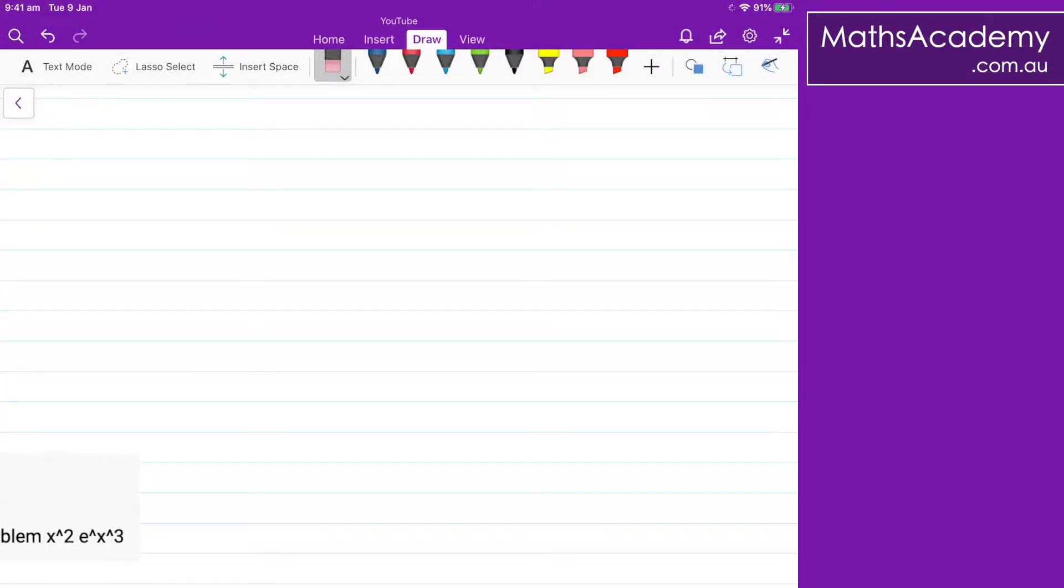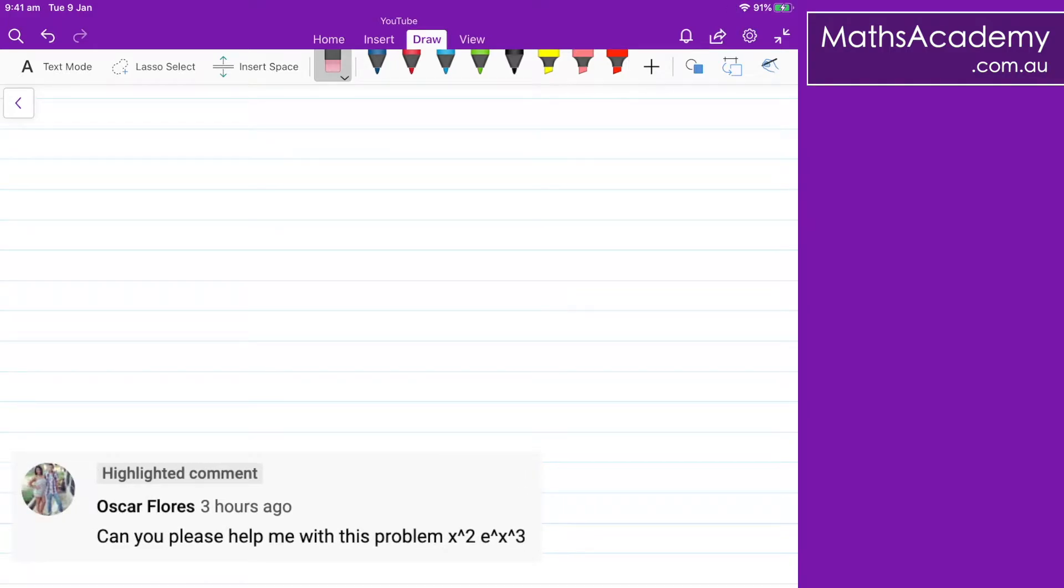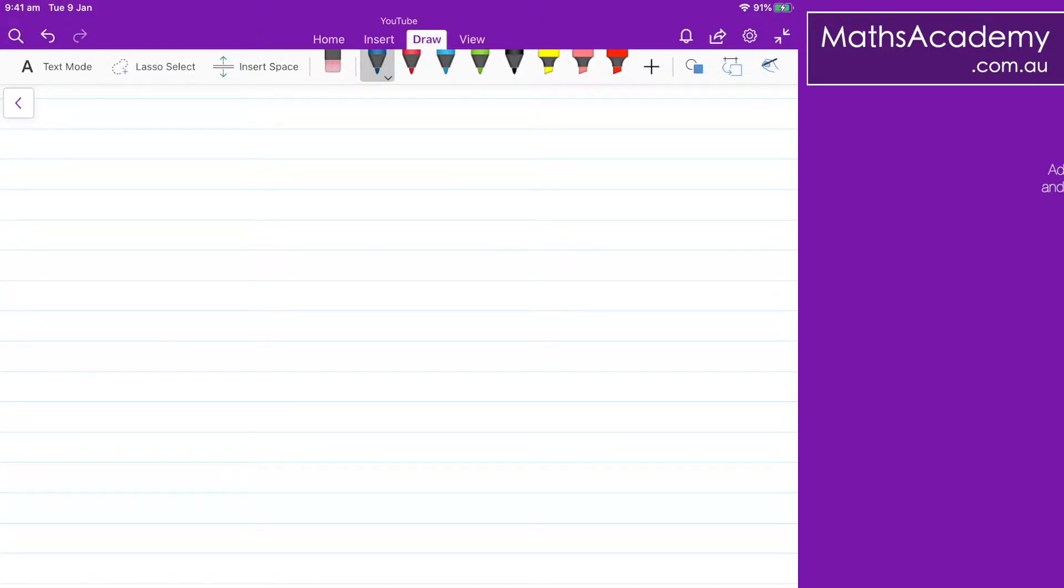I've had a request come through from somebody called Oscar, and he's wanting me to show him how to integrate x squared e to the x cubed. Well, let's go ahead and have a look at that. So we have the integral of x squared e to the x cubed, and obviously that's with respect to x.